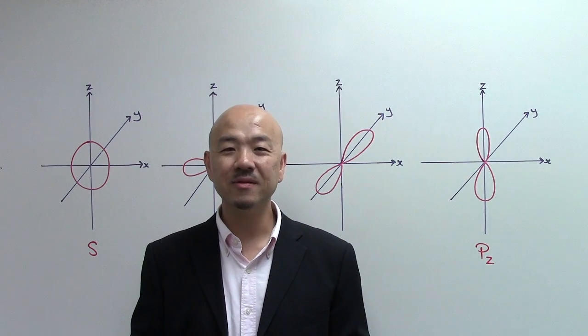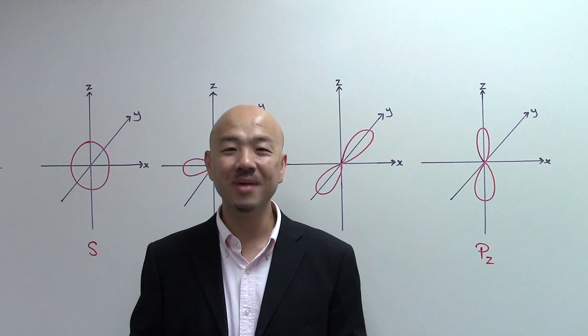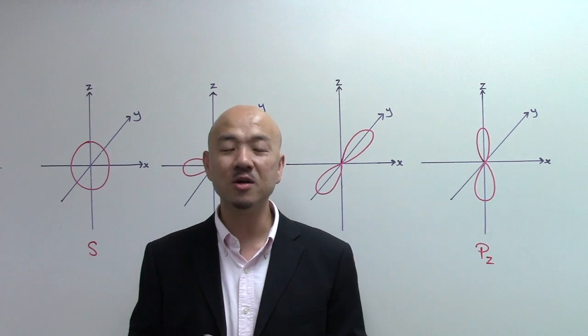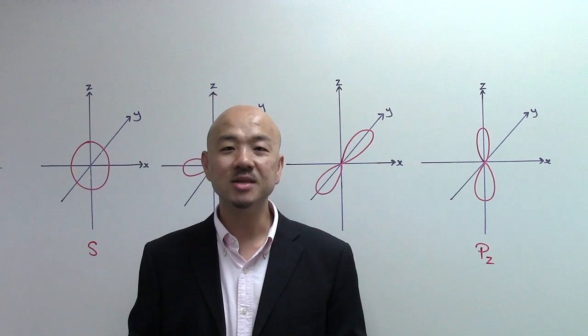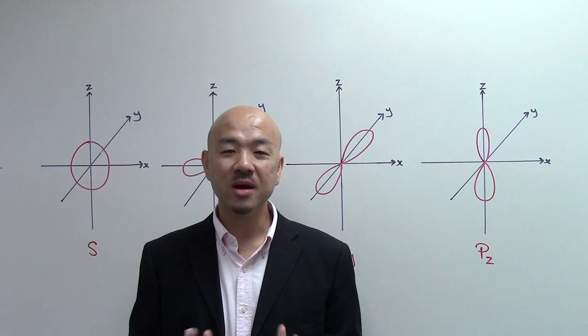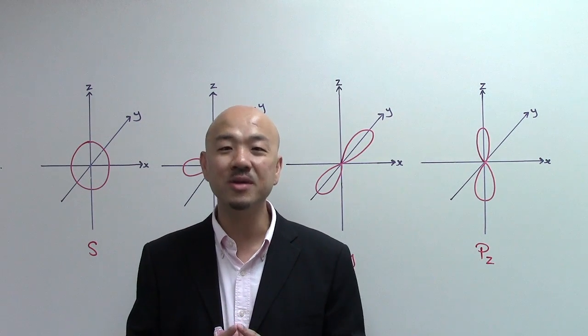Hi, this is Sean Chua from alevelh2chemistry.com. Welcome back. Today we're going to discuss atomic structure, and one of the concepts we're going to talk about is atomic orbitals, which is defined as the region where you have the highest probability of finding electrons around the nucleus.